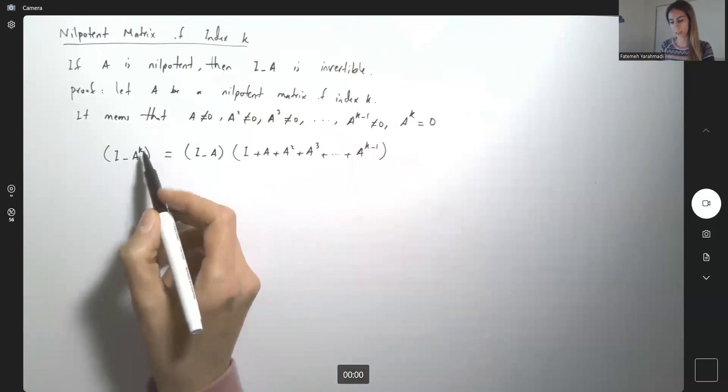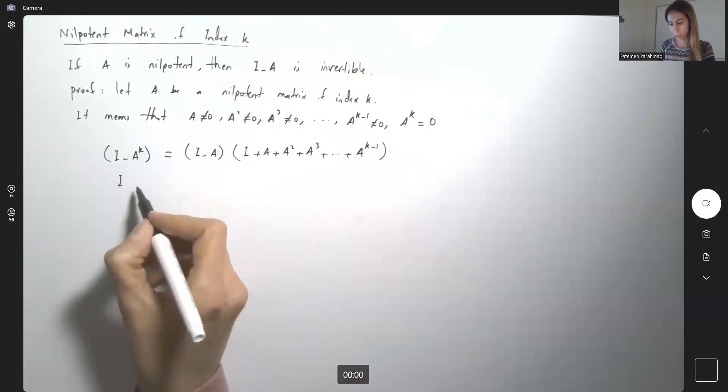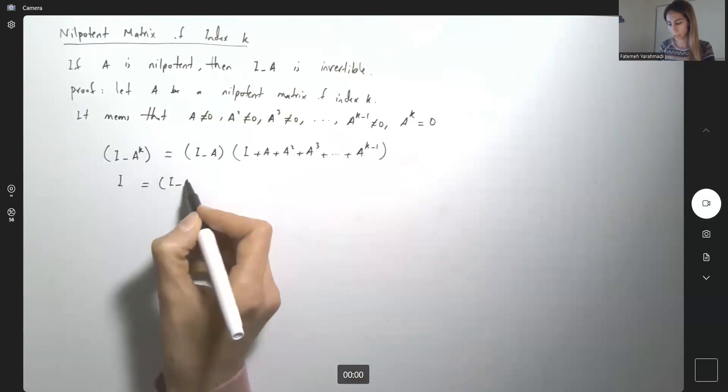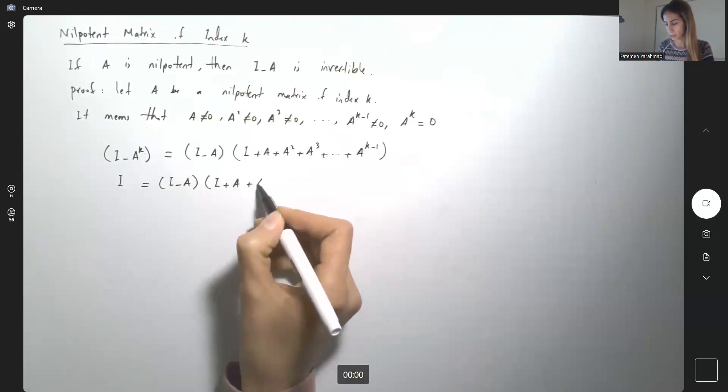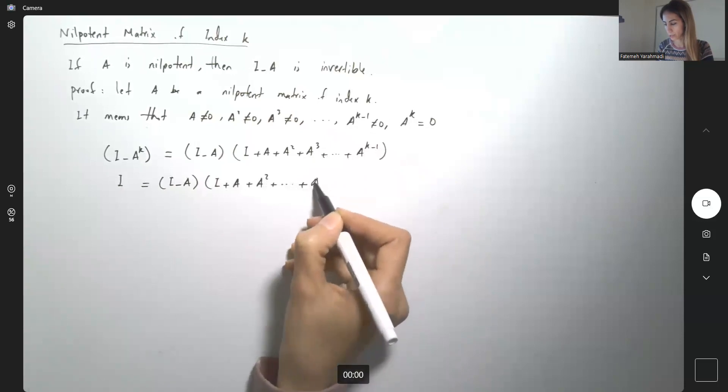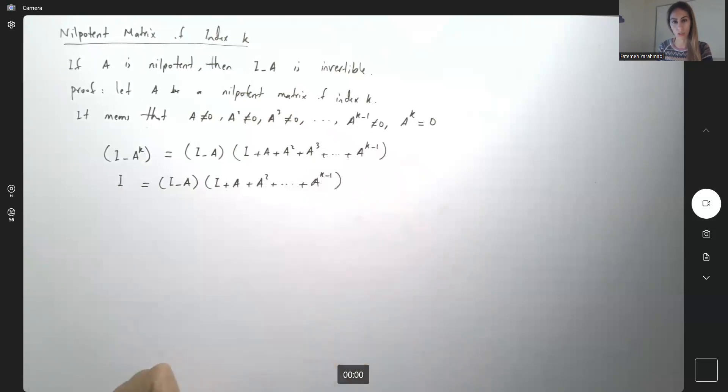But at the same time, A to power K is zero. So if this guy becomes I, I is equal to I minus A times I plus A plus A squared plus A to the third plus A to power K minus 1.